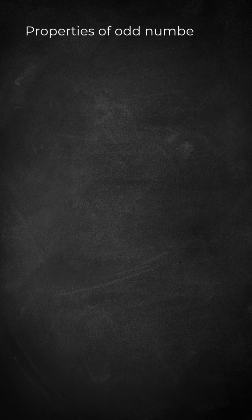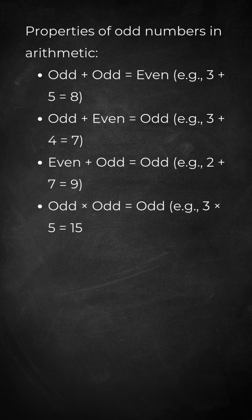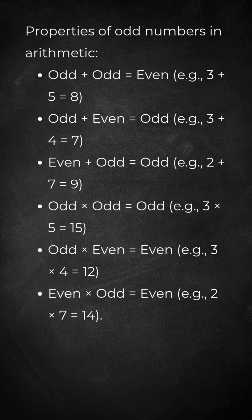Properties of odd numbers in arithmetic. Odd plus odd equals even, example: 3 plus 5 equals 8. Odd plus even equals odd, example: 3 plus 4 equals 7. Even plus odd equals odd, example: 2 plus 7 equals 9.